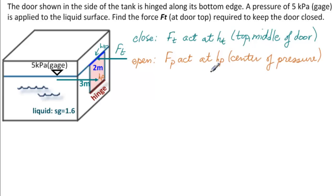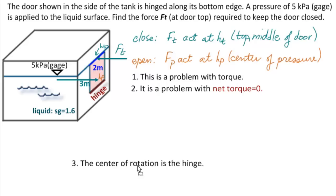We know how to calculate Fp, we know how to calculate Hp, and we can see where Ht is, so we need to calculate Ft. So in the end, how do we solve it once we find this data? We have to realize that this is a problem with torque. It is a problem with net torque equal to zero.